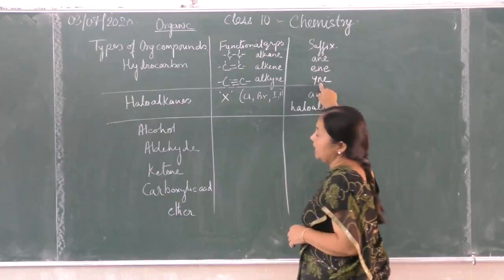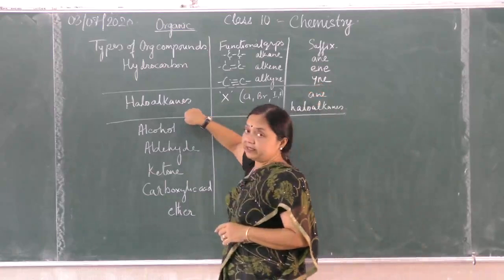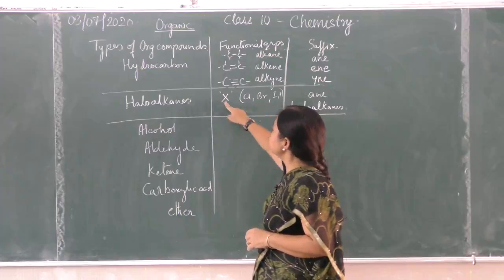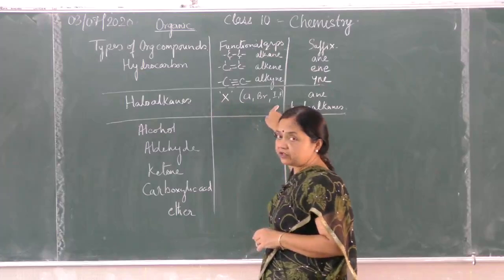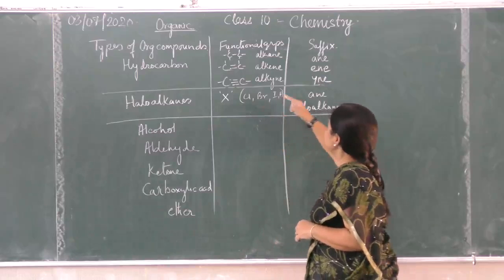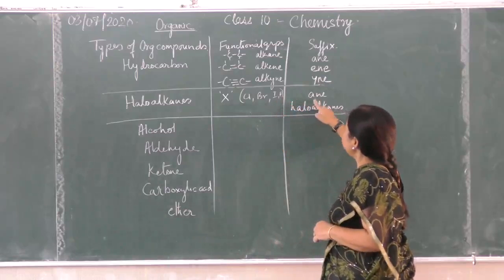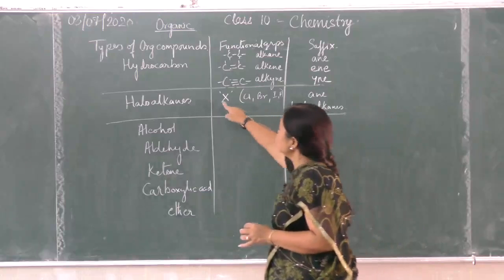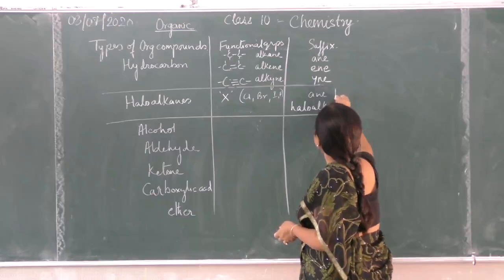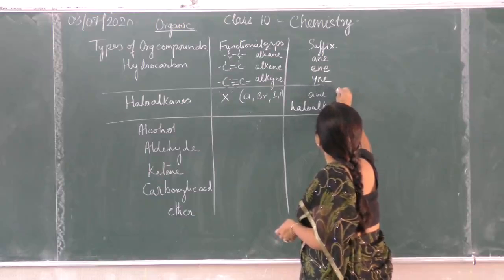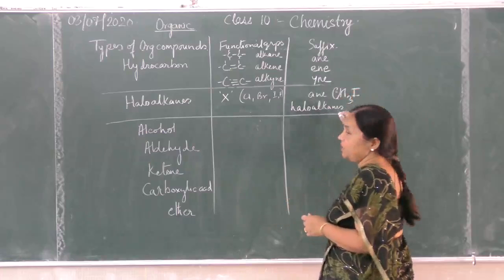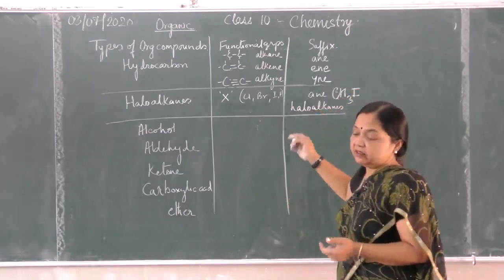Next class is halo alkanes. Halo alkanes means the halo group - any of the halogens X stands for any of the halogen group: chlorine, bromine, iodine, fluorine. For example, CH3I is termed as a halo alkane, iodomethane.